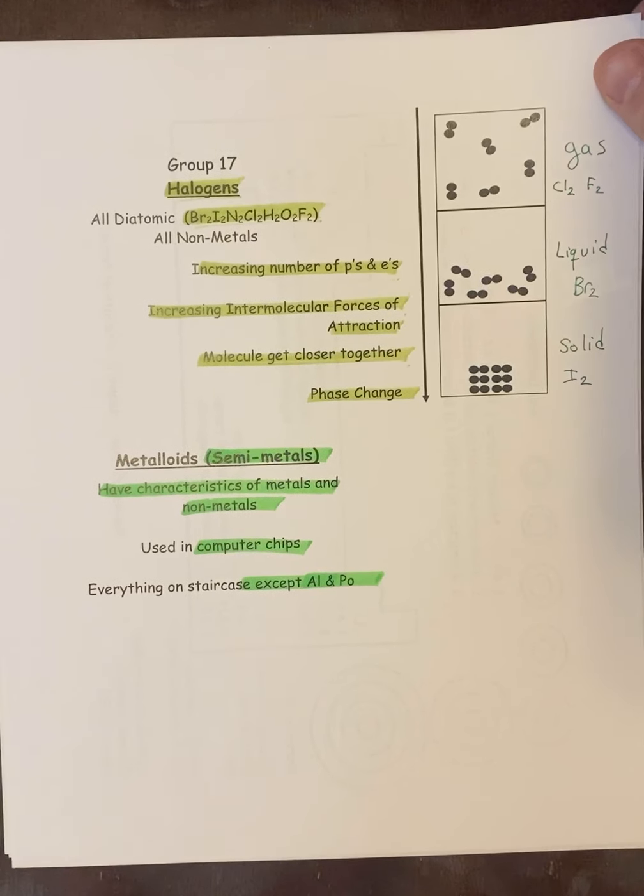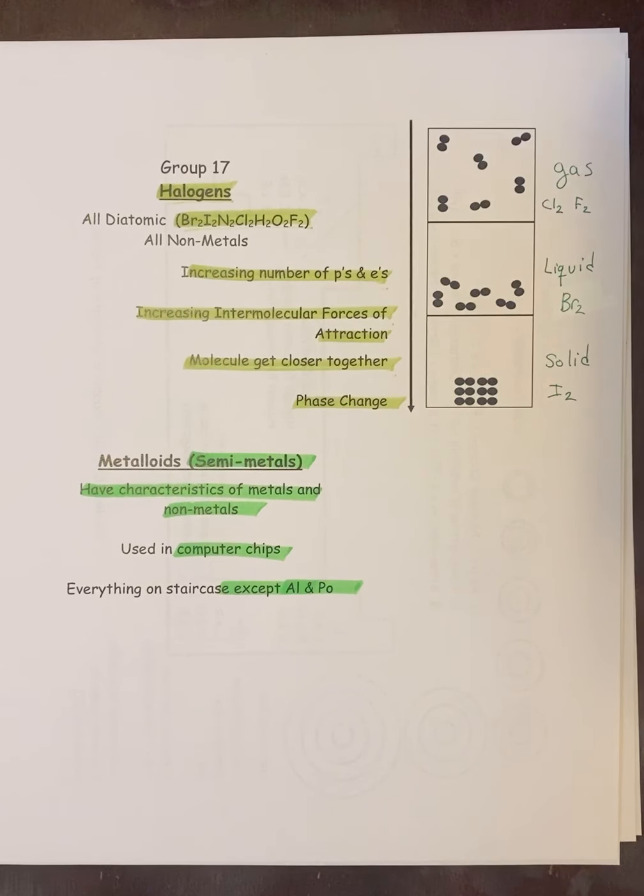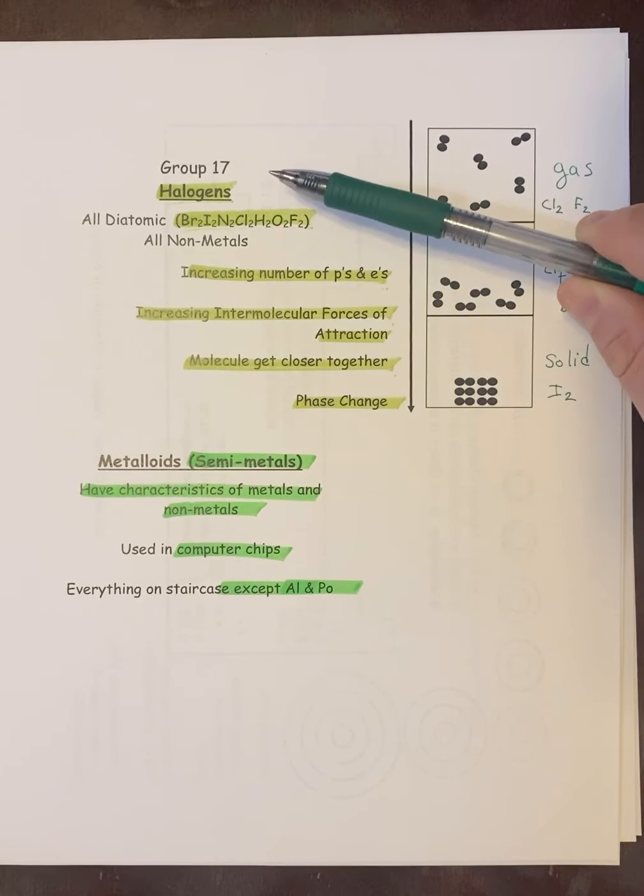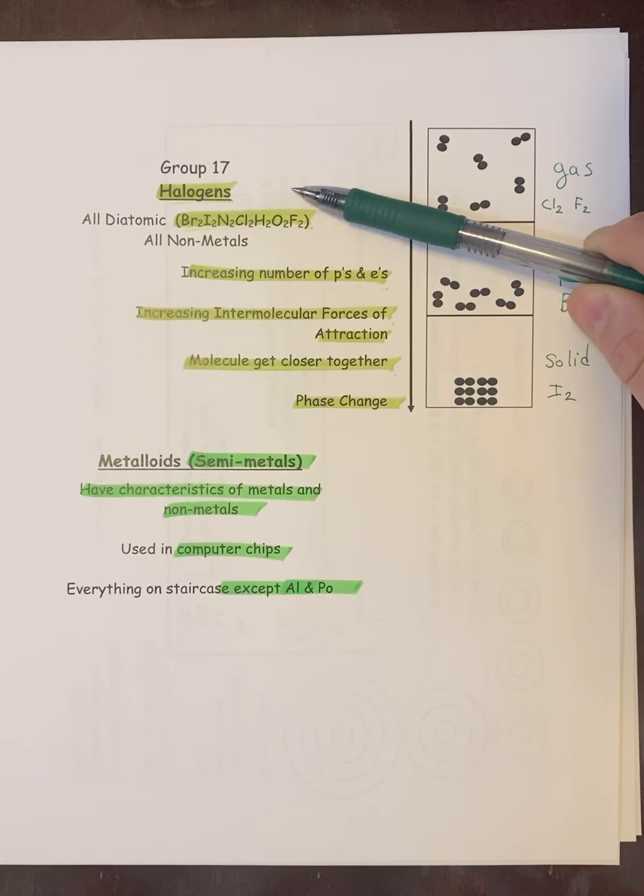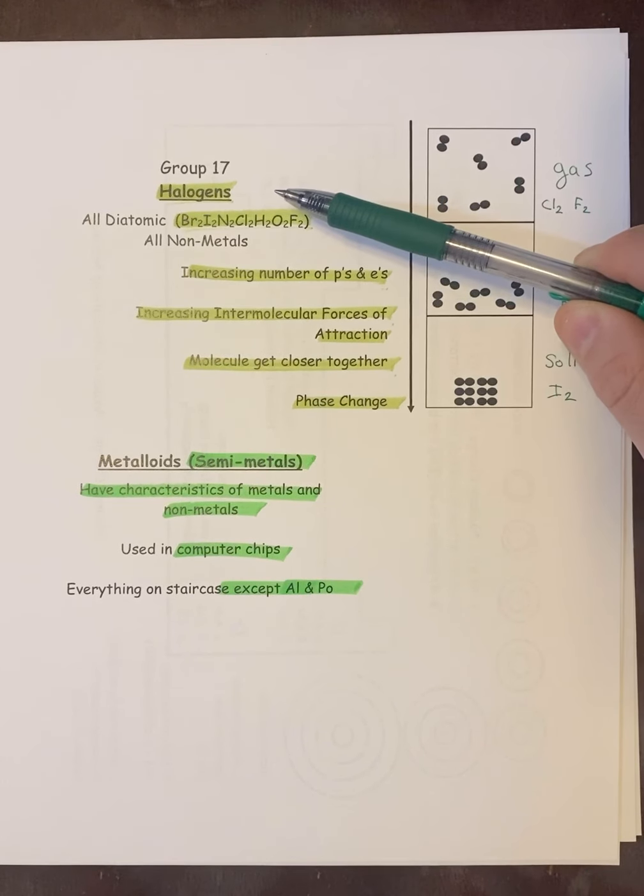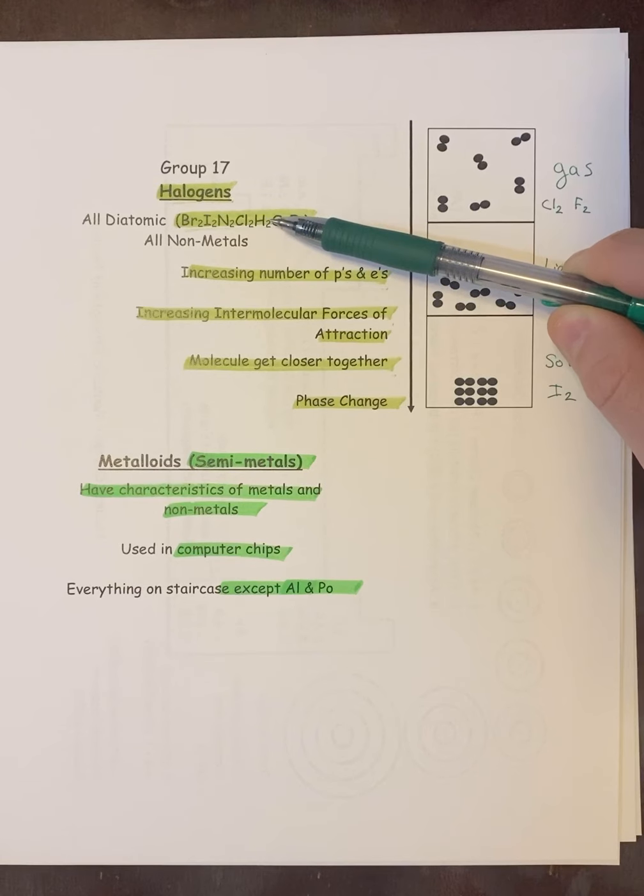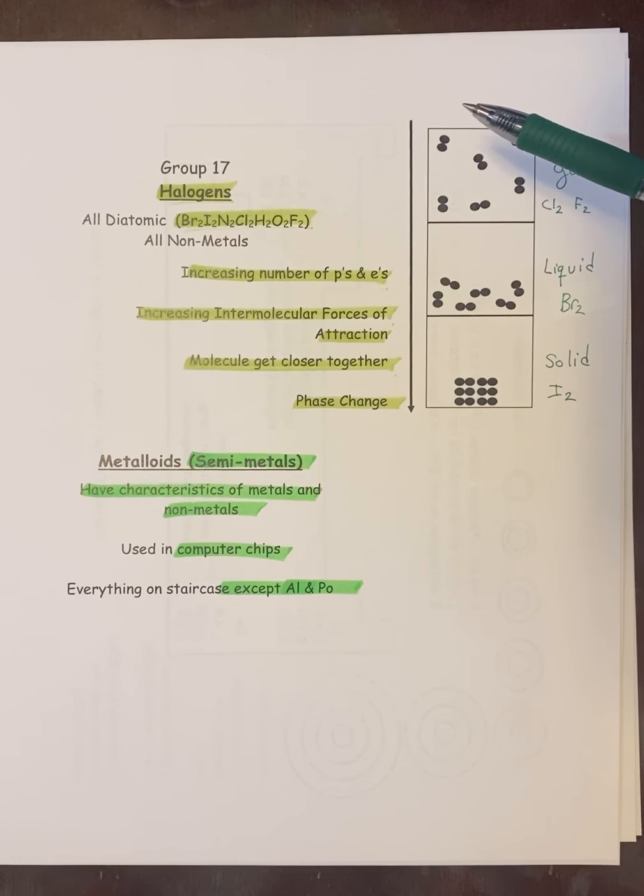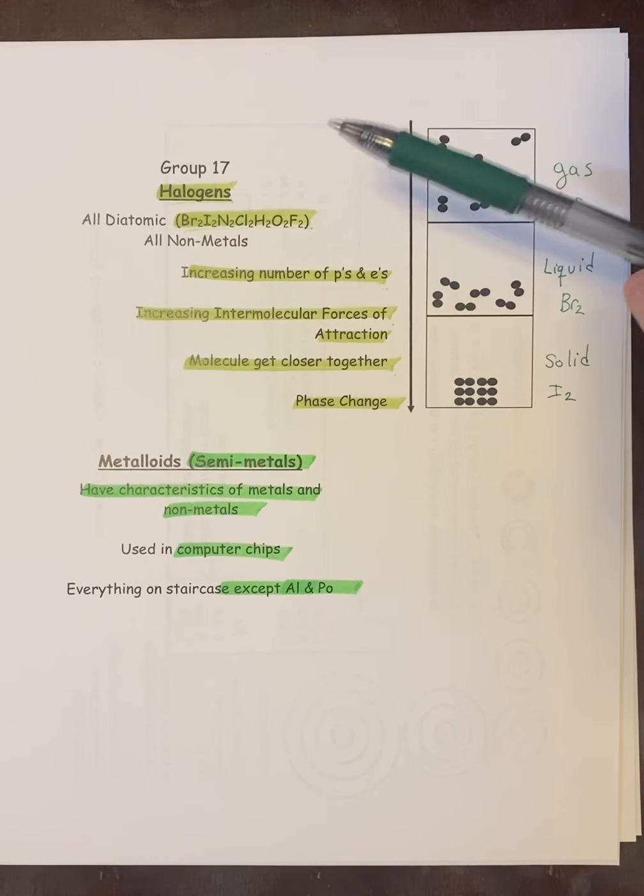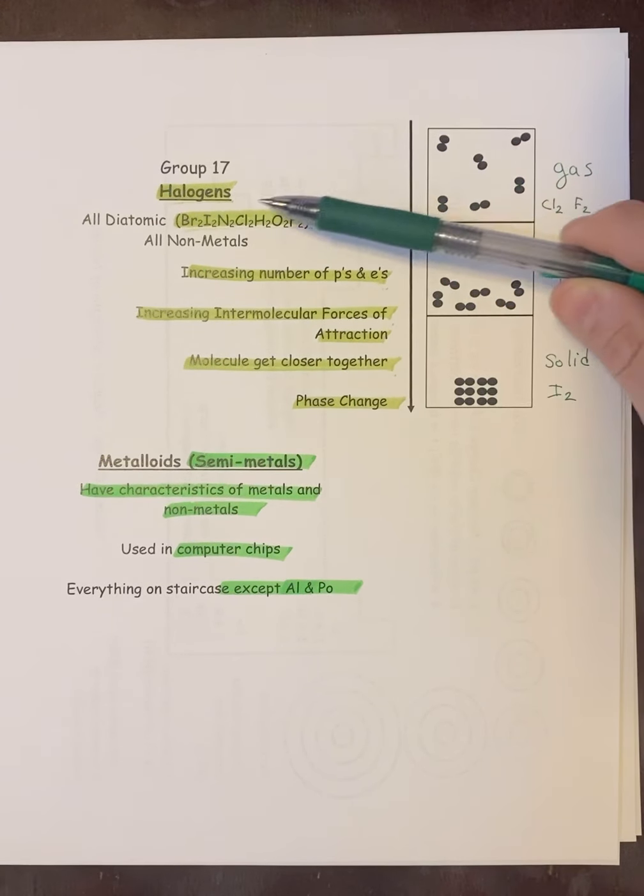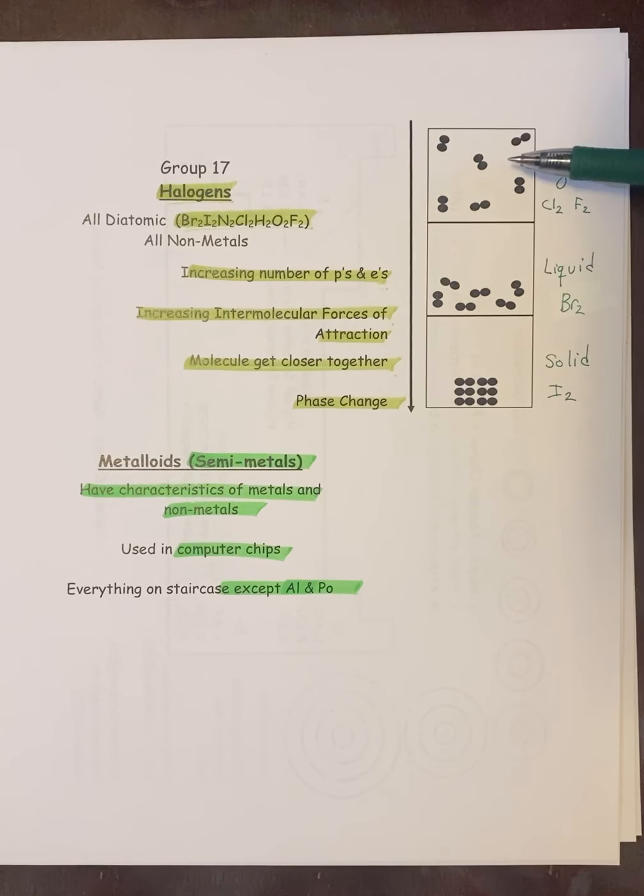We've got the halogens, and we've got semi-metals or metalloids. So the halogens are BrInClHOF, those are the ones that are naturally diatomic. Or I should say all of the halogens are in BrInClHOF. Some of BrInClHOF are not, in fact, halogens. Obviously, hydrogen, oxygen, and nitrogen are not in group 17, and so they're not part of the halogens, but they are, in fact, diatomic. So just be aware of that.